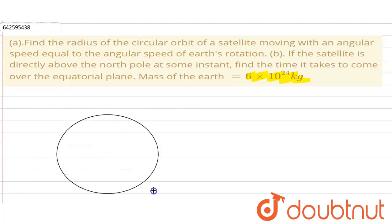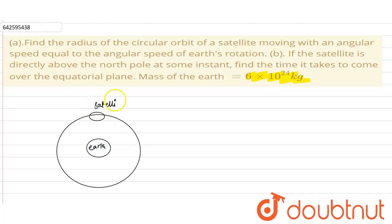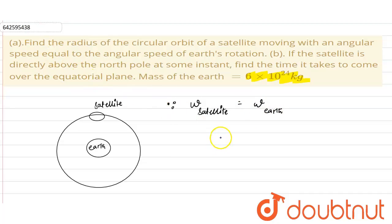In the given question, we have to find the radius of the circular orbit of a satellite moving with angular speed equal to the angular speed of the Earth. Since the angular speed of the satellite is equal to the angular speed of Earth, the time period of one revolution of the satellite will be equal to the time period of rotation of Earth.